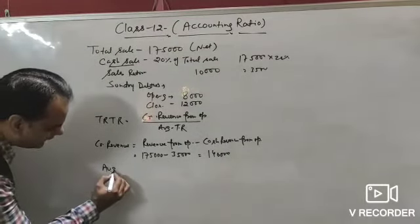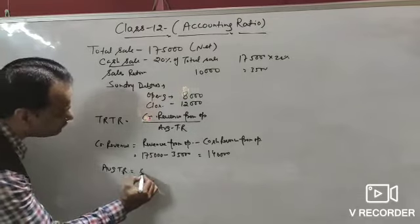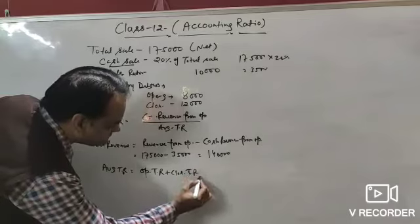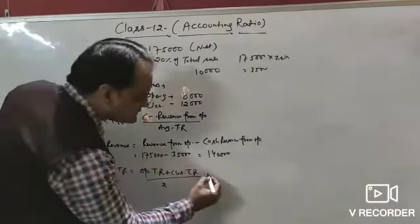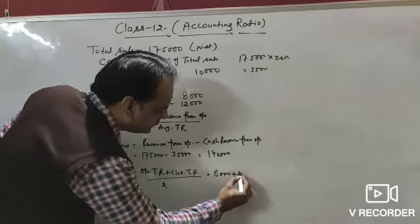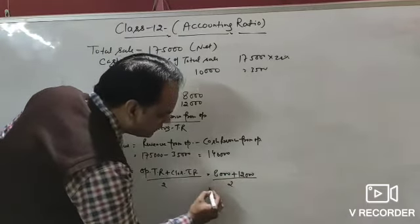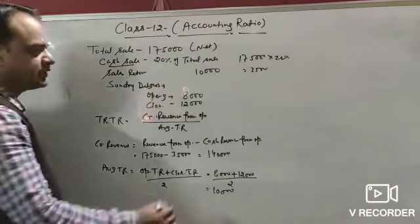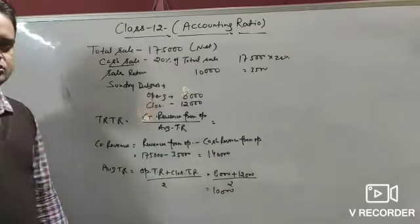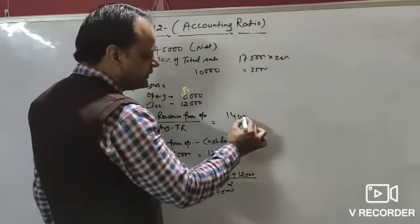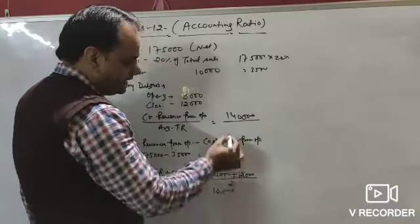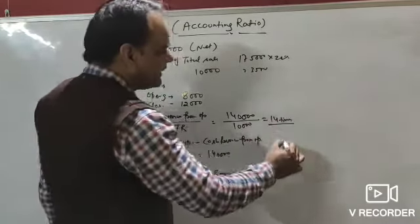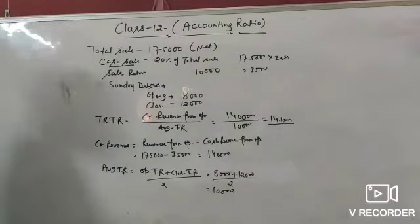Average trade receivable = (opening ₹8,000 + closing ₹12,000) / 2 = ₹10,000. Trade receivable turnover ratio = ₹1,40,000 / ₹10,000 = 14 times.